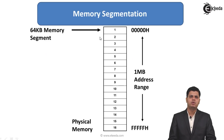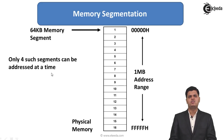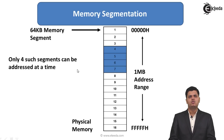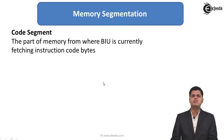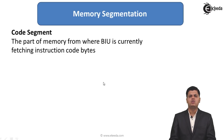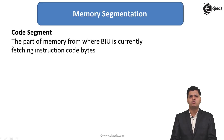We can have more than 16 segments, but at a time only 4 segments can be used. Each segment is 64 kilobytes in size. In our example, segments 4, 5, 6, and 7 can be used for programming purposes. These segments are defined based on what is being stored in them — their names are code segment, data segment, extra segment, and stack segment.